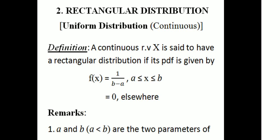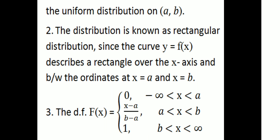Remarks: First, a and b, where a < b, are the two parameters of the uniform distribution on the open interval (a, b). Second, the distribution is known as a rectangular distribution since the curve y = f(x) describes a rectangle over the x-axis between the ordinates at x = a and x = b.